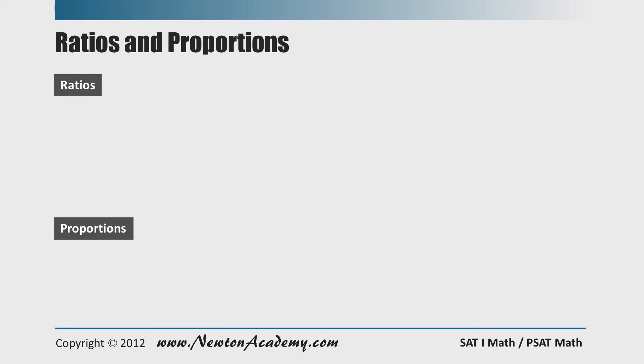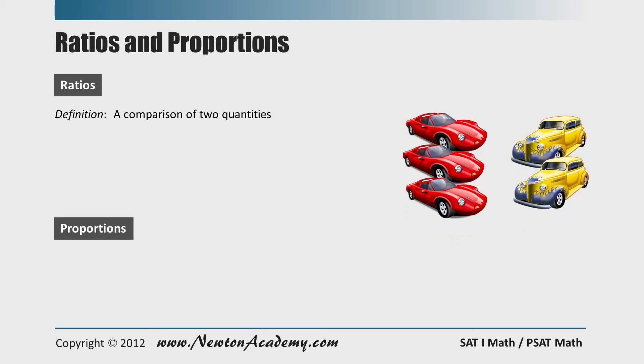First of all, let me give you their definitions. Ratios are a comparison of two quantities. Let's say we have three red cars and two yellow cars, and the example for the ratio problem would be something like this. What is the ratio of the number of red cars to the number of yellow cars? Then we say three to two, or using a colon, three to two, or using a fraction, three over two. These three expressions are completely equivalent to each other. For the sake of mathematical computations, however, we use the last expression, which is a fraction form.